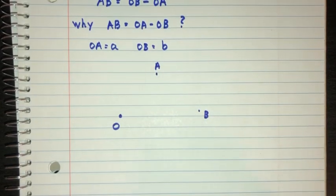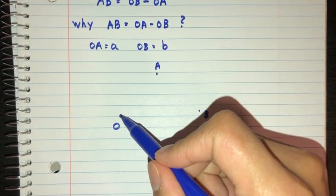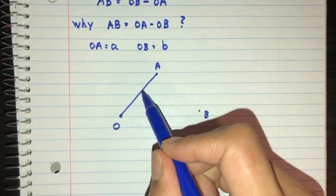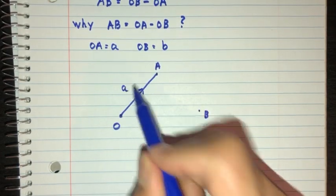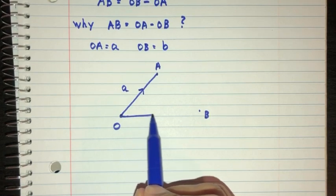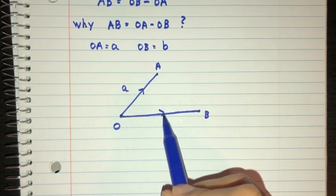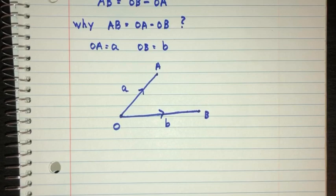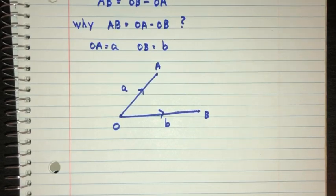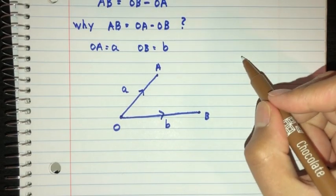Now this is OA. O going to A is given to you by A, and O going to B is given to you by B. Now my question is, we have to find the value of AB.